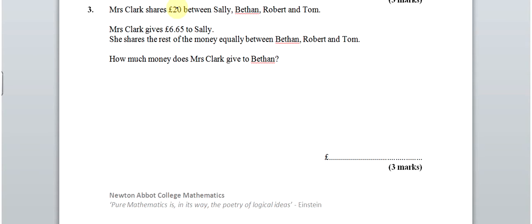Okay, question 3. So, £20 is shared between Sally, Beth and Robert and Tom. Mrs Clark gives £6.65 to Sally and then the rest of the money is shared equally. So, starting with £20 and we're going to subtract the £6.65.